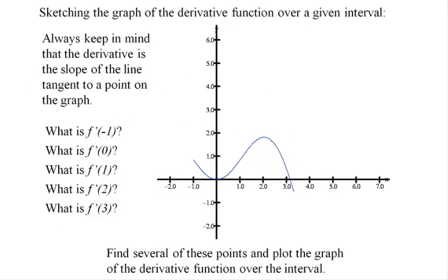Something we're going to become very adept at is looking at the graph of a function and talking about what's going on with the derivative of that function — and even graphing the derivative of that function. We're going to work an example where we sketch the graph of the derivative function by looking at what's going on with the original function. Here's the original function, the graph of F of x. If we can determine what the slope is at given values, we can graph those points, connect them, and come up with the graph of the derivative function.